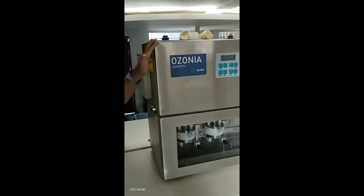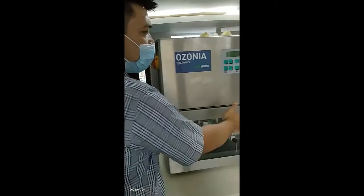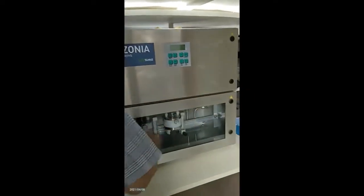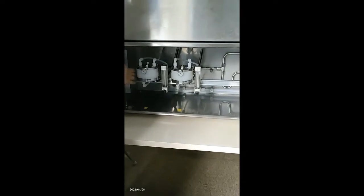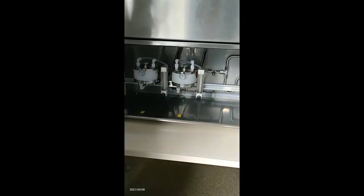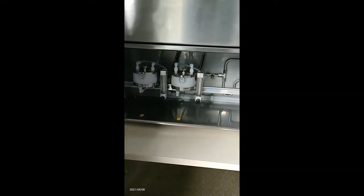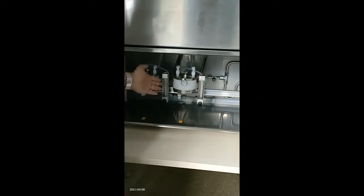The ozone generator machine has a key. This key is for opening the windows for the machine generator. We have two membrane cells here, and we will show you how to install the electrode set in the membrane cell.